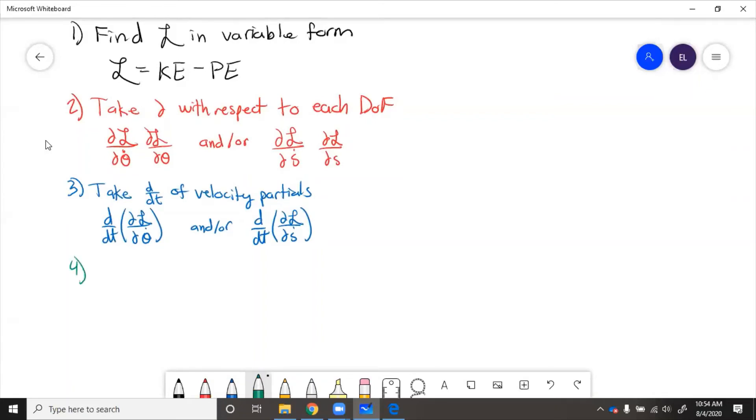So then finally, you set the sum of derivatives equal to the external forces and torques for each independent variable using Lagrange's equations. So this looks like d dt del L del theta dot minus del L del theta. So these things that you figured out in steps two and three, you set that equal to the external torques.